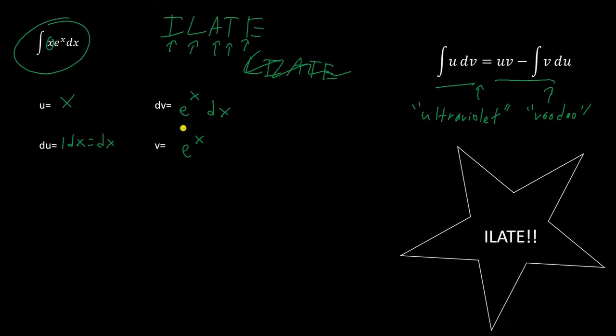Now that we know these four values, we can use our equation. Plugging in this stuff gives that the integral of x e to the x dx is uv, so x e to the x minus the integral of v du, so the integral of e to the x and then dx. Now this guy, we can solve this guy. The integral of e to the x is e to the x. So our final answer is x e to the x minus e to the x plus c.